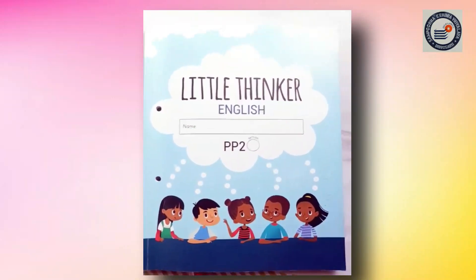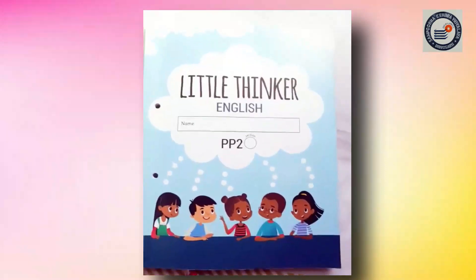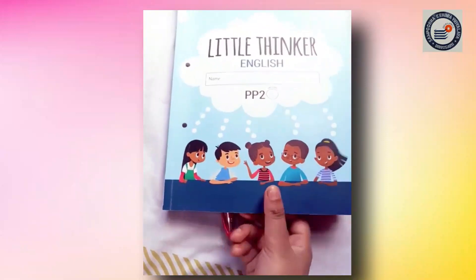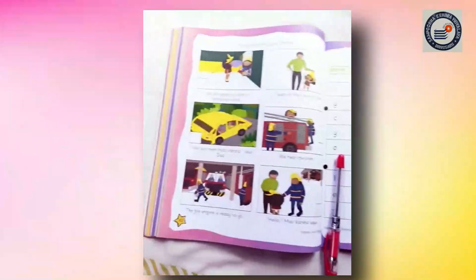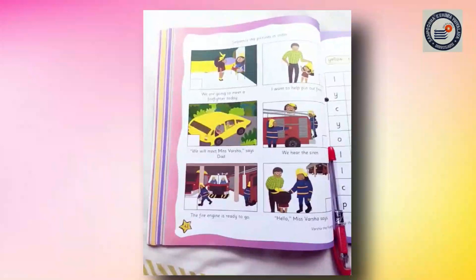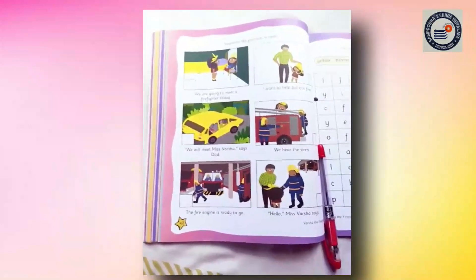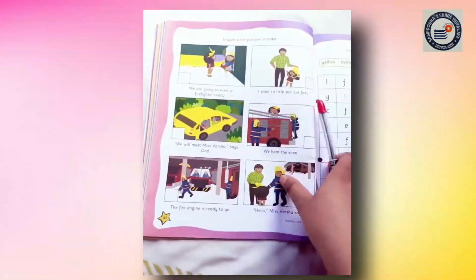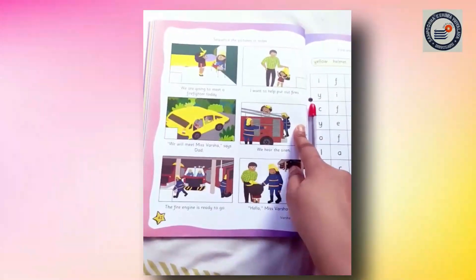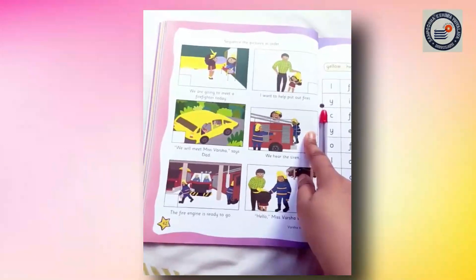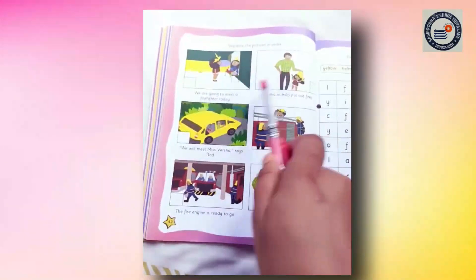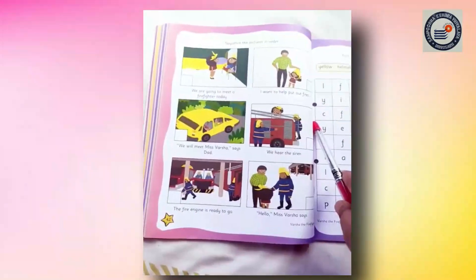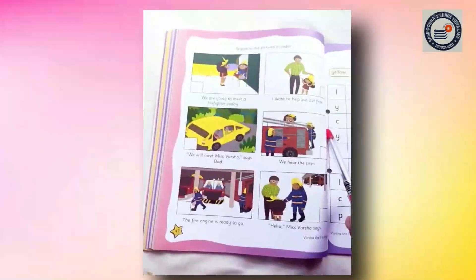I hope all of you are ready with your Little Thinker English book. Now all of you open page number 42. Look at this worksheet. Do you see some pictures from the story here? Yes, we can see some pictures.